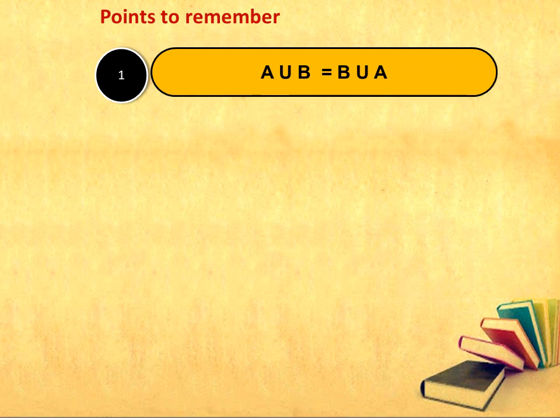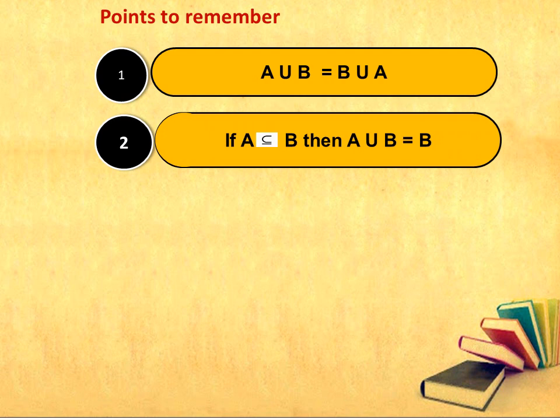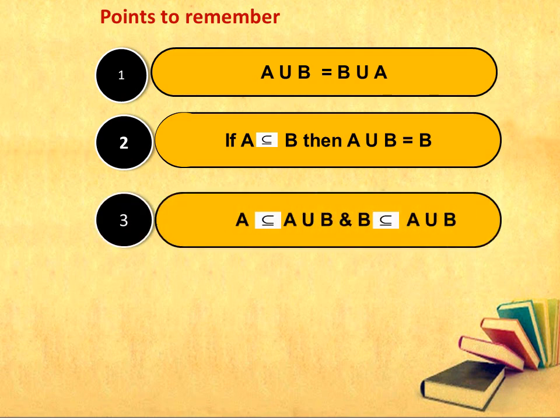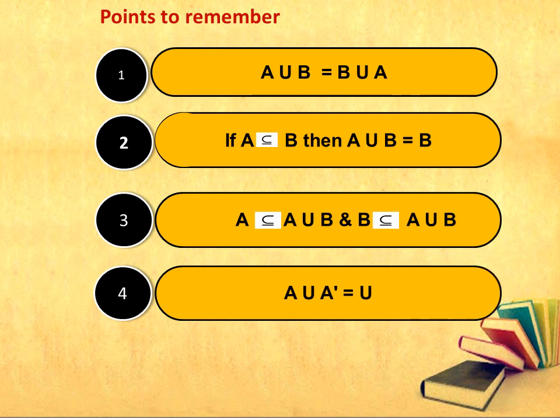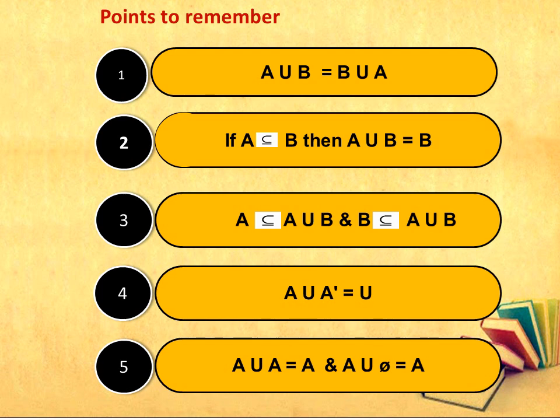Points to remember under the union of sets: First, A union B equals B union A. Second, if A is a subset of B, then A union B equals B. Third, A is a subset of A union B, and B is also a subset of A union B. Fourth, the union of A and the complement of A will be the universal set. Fifth, A union A will always be set A, and the union of A and the null set will again be set A.